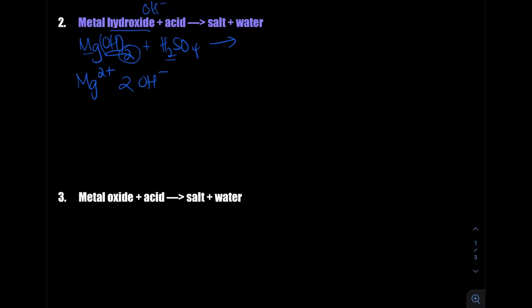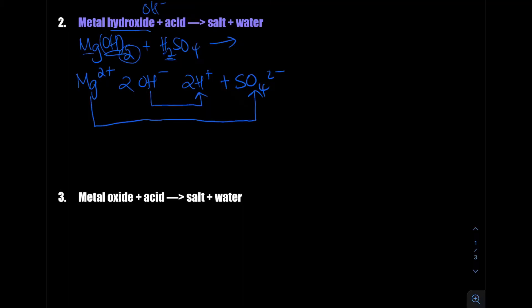The sulfuric acid will donate two protons — 2H⁺ — plus SO₄²⁻, which is another polyatomic ion. There's an exchange of ions: magnesium is attracted to SO₄²⁻, the sulfate ion, forming MgSO₄ — magnesium sulfate — in a 1:1 ratio. The OH⁻ and H⁺ combine to form water, and since there are two OH⁻ and two H⁺, it produces two water molecules. So we have MgSO₄ plus two water.